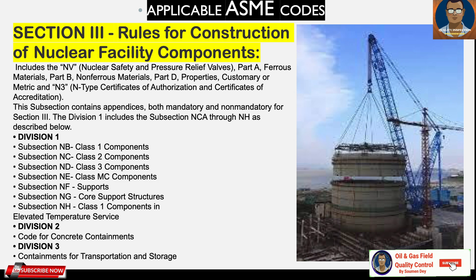ASME Section 3 is the rule for construction of nuclear facility components. It includes NV nuclear safety and pressure relief valves, Part A ferrous material, Part B non-ferrous, and Part D properties. The subsection contains appendices both mandatory and non-mandatory. Division 1 includes subsections NCA through NH. Division 1 covers Class 1 components, with subsections: NC for Class 2, ND for Class 3, NE for Class MC components, NF for supports, NG for core support structures, and NH for Class 1 components in elevated temperature service. Division 2 is the code for concrete containments and Division 3 is for containments for transportation and storage.